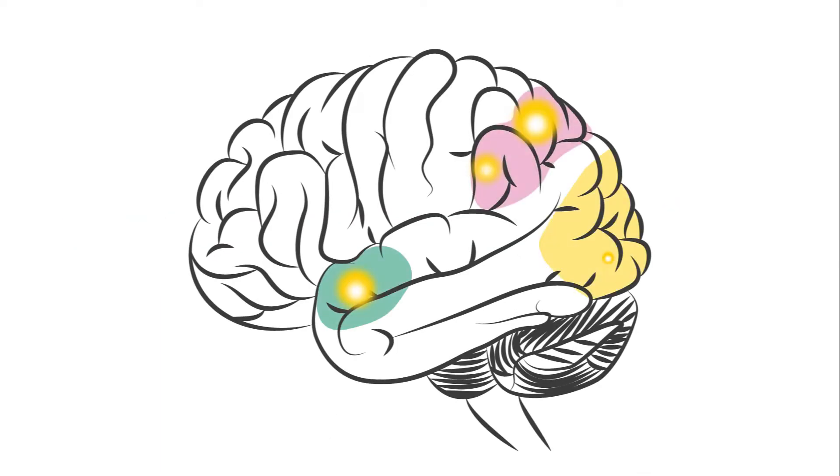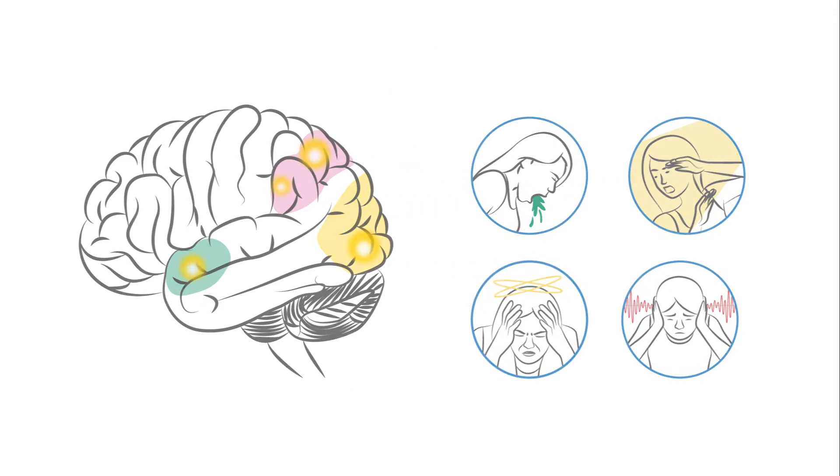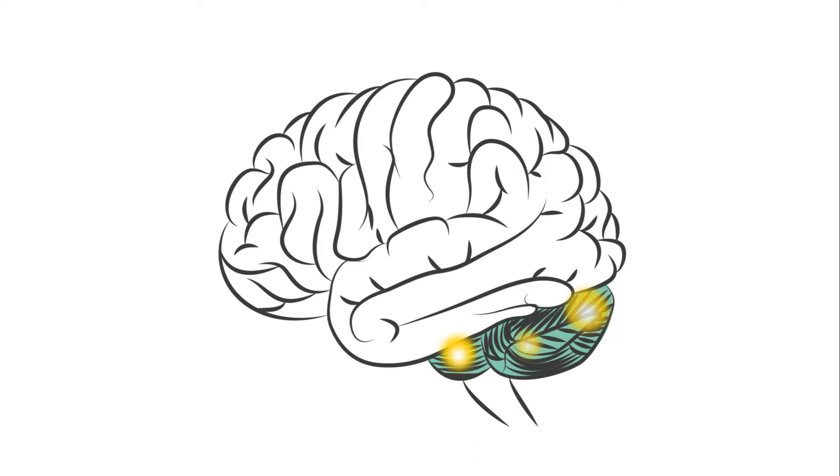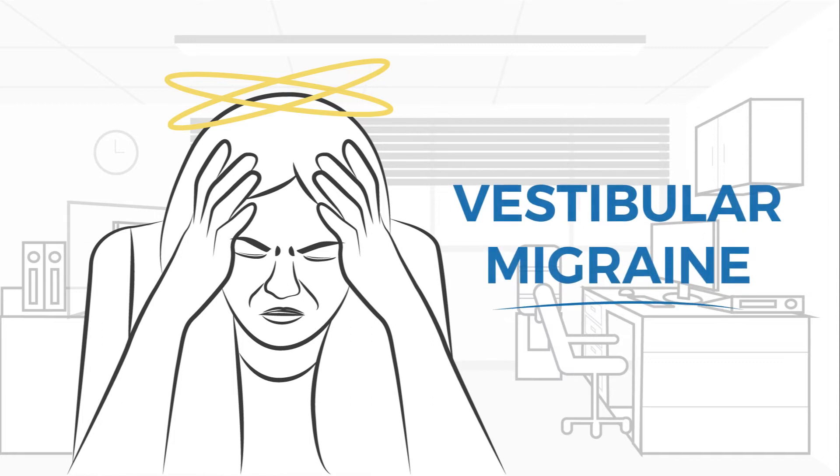Many parts of the brain can be affected in a migraine attack, which means a wide range of symptoms can occur. When brain circuits for balance are affected, a person will experience symptoms of dizziness, which is known as vestibular migraine.